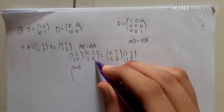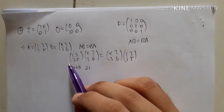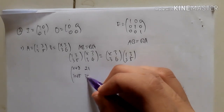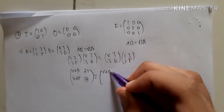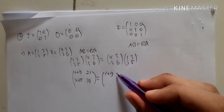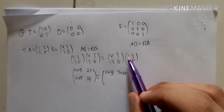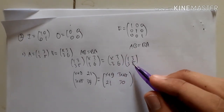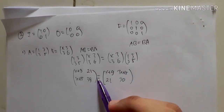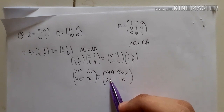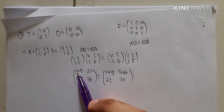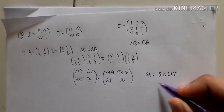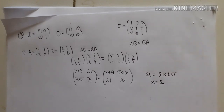Computing A×B gives entries: x+9, 21, 3x+15, 39. Computing B×A gives entries: x+9, 3x+15, 21, 39. To make the two matrices equal, we compare element by element. From x+9 = x+9 and 21 = 21, the consistent equation gives x = 2.